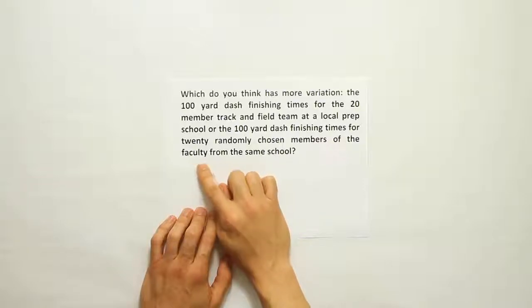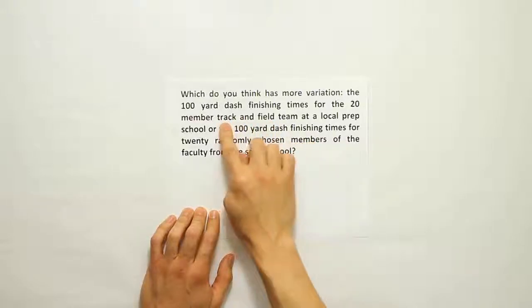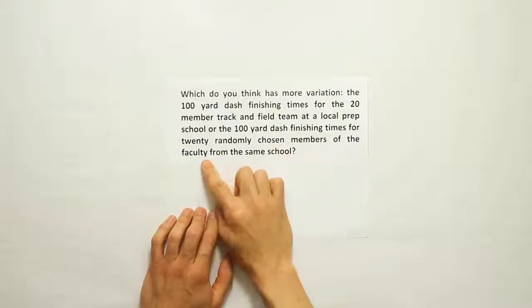So there should be theoretically more variation in the faculty members' scores for the 100-yard dash than there would be in the track and field team. This would be a tighter group. The scores would be more clustered in this category. In the case of the faculty members, their scores would probably be all spread out depending on their varying fitness levels.